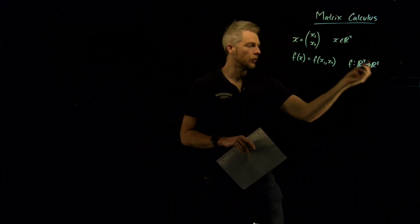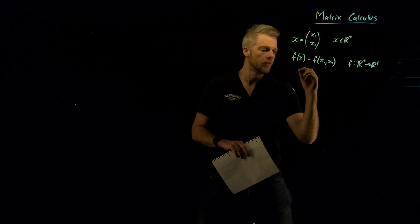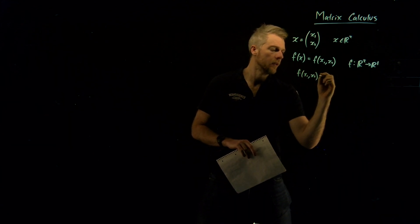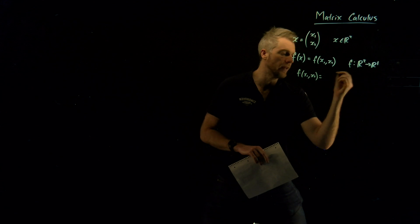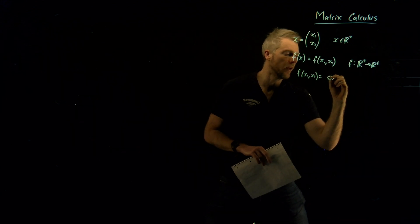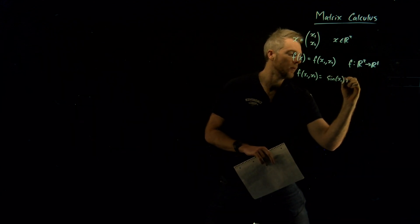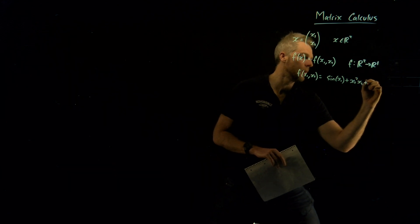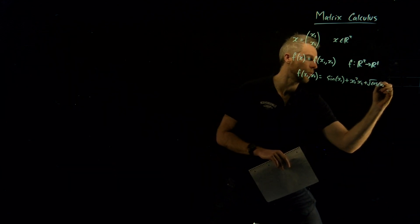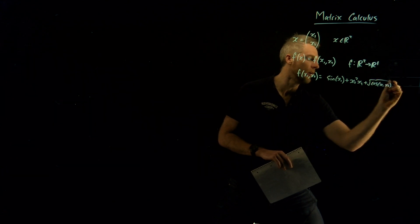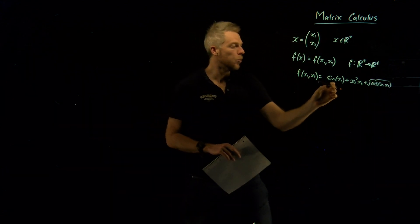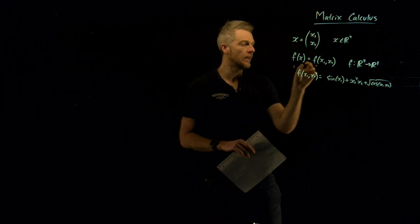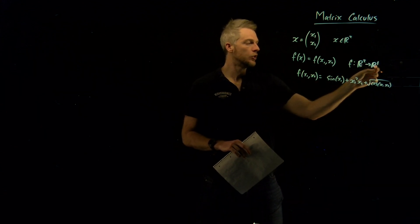An example of this, in case you don't like the abstract mathematics, an example of this could be f of x1, x2 is equal to, I don't know, anything we like. Let's say sine of x1 plus x2 squared times x1 plus the square root of cosine x1, x2, for example. The point is that this is a one-dimensional output, even though it's a two-dimensional input. So we're saying f maps from R2 to R1.